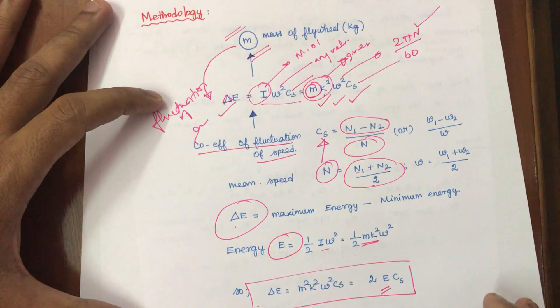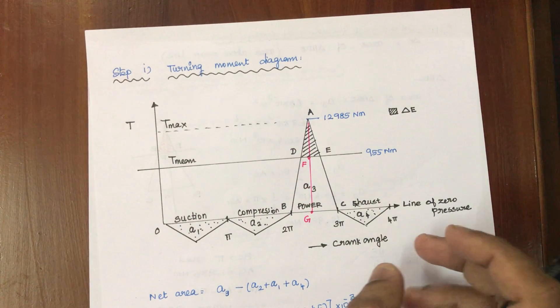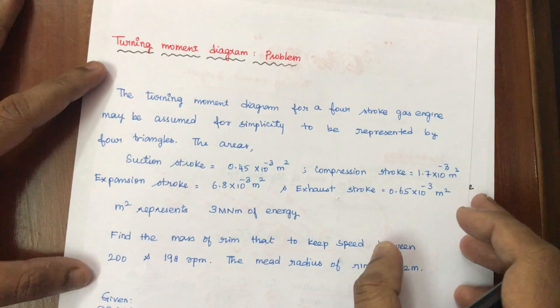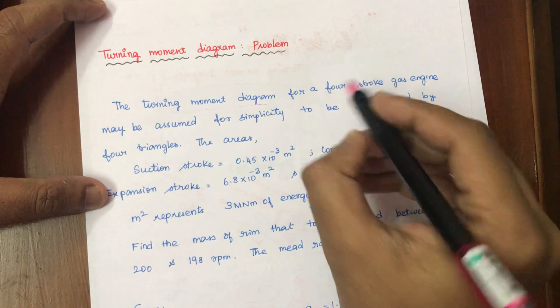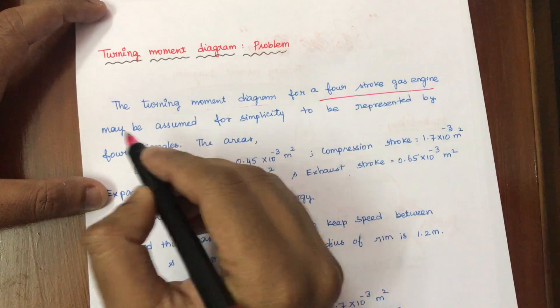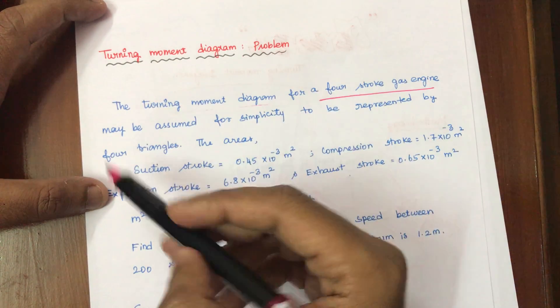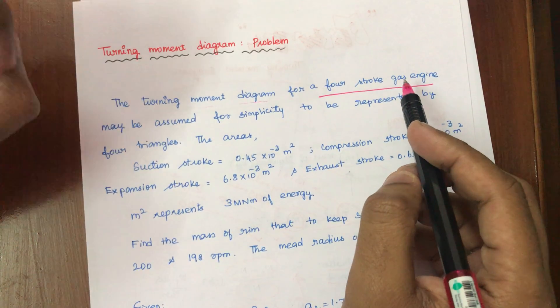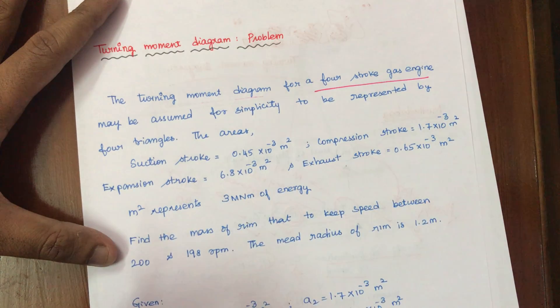We can directly go to the problem and see how to solve it. This is the turning moment diagram. We can calculate using the turning moment diagram. Here they have said the turning moment diagram for a 4-stroke gas engine. There are also 2-stroke, single-stroke, and multi-cylinder types. There is a standard diagram for each engine, and we need to be thorough with it.